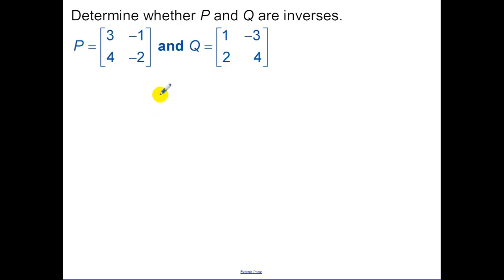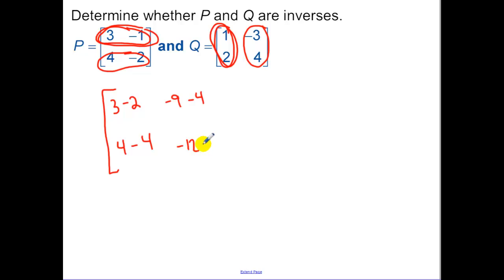Determine whether P and Q are inverses. Row times column, we have 3 minus 2. Row times column, negative 9 minus 4. Row times column, we have 4 minus 4. And then lastly, row times column, we have negative 12 minus 8.